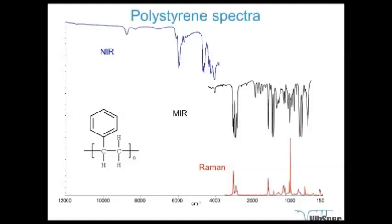From an instrumental perspective, using a 532 nm laser, collecting the complete Raman spectrum from 0 to 4000 wavenumbers requires a detector range of about 140 nanometers. Using a red 785 nm laser requires a much wider wavelength range, so the detector must be more sensitive over a larger wavelength span.